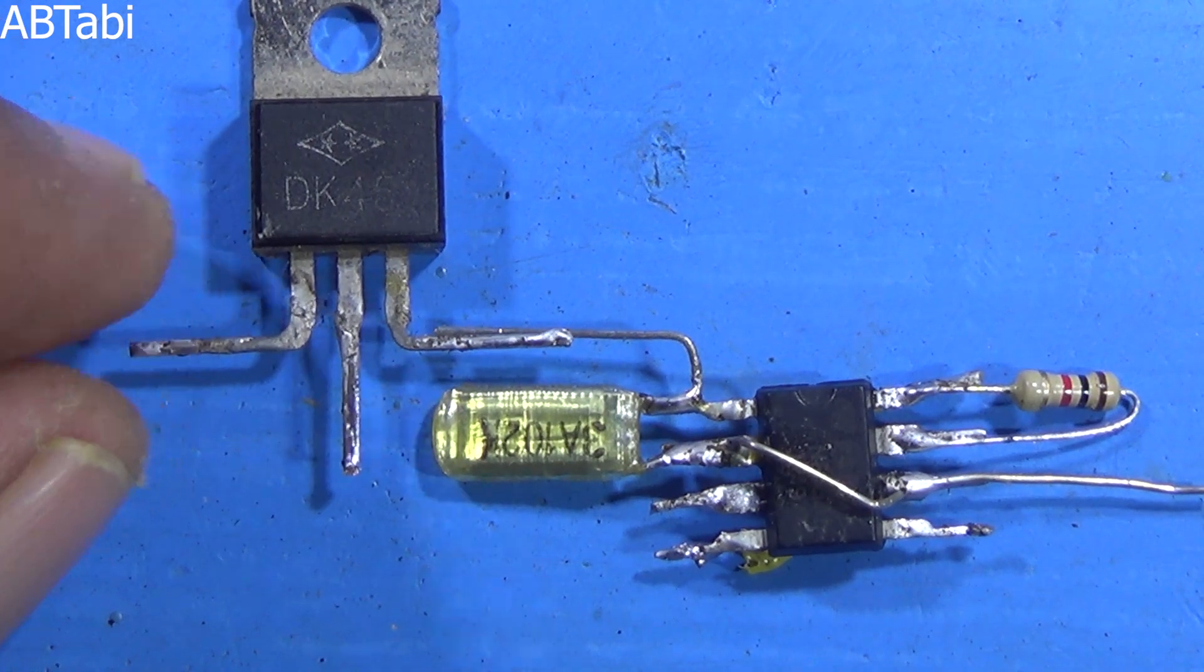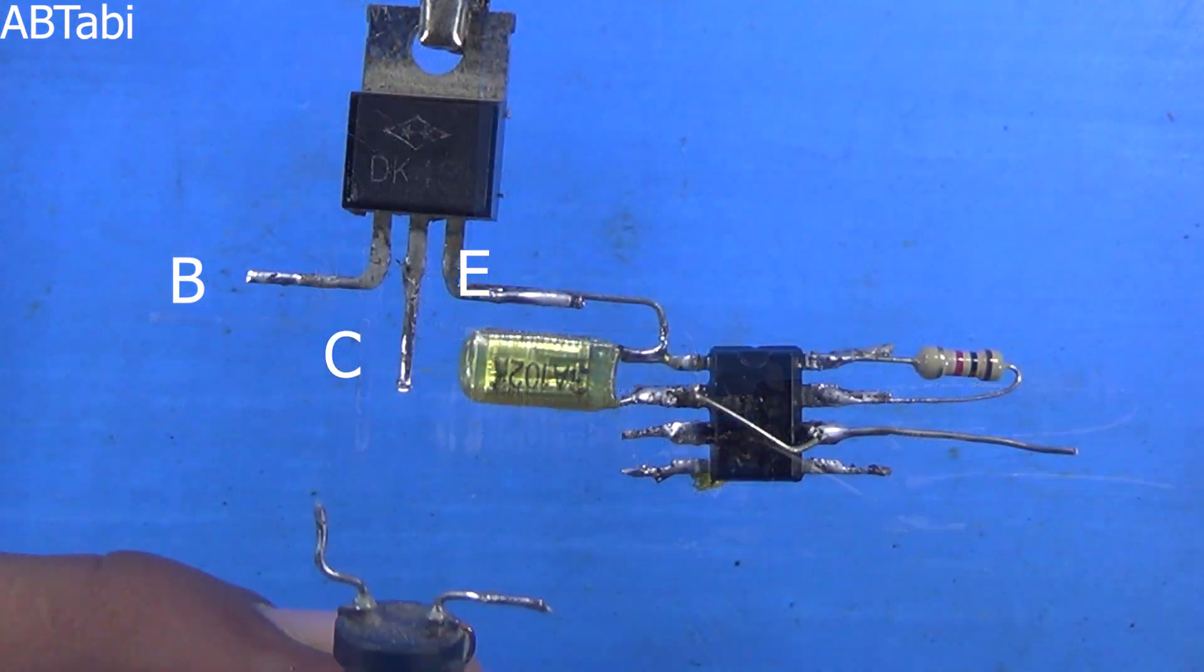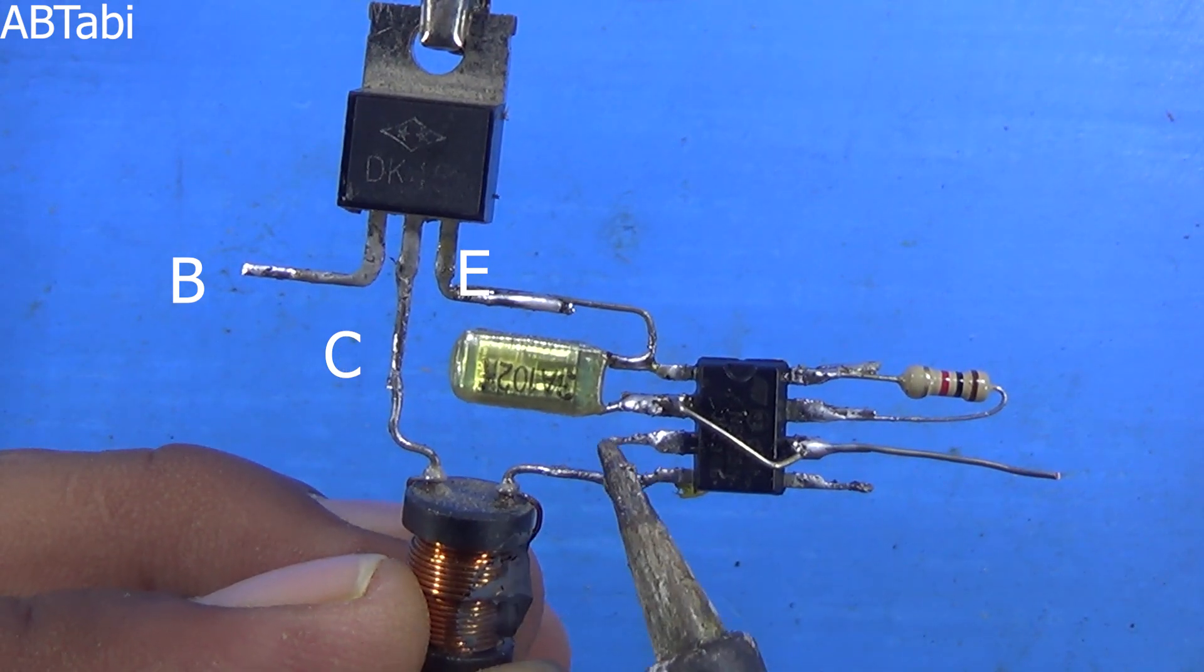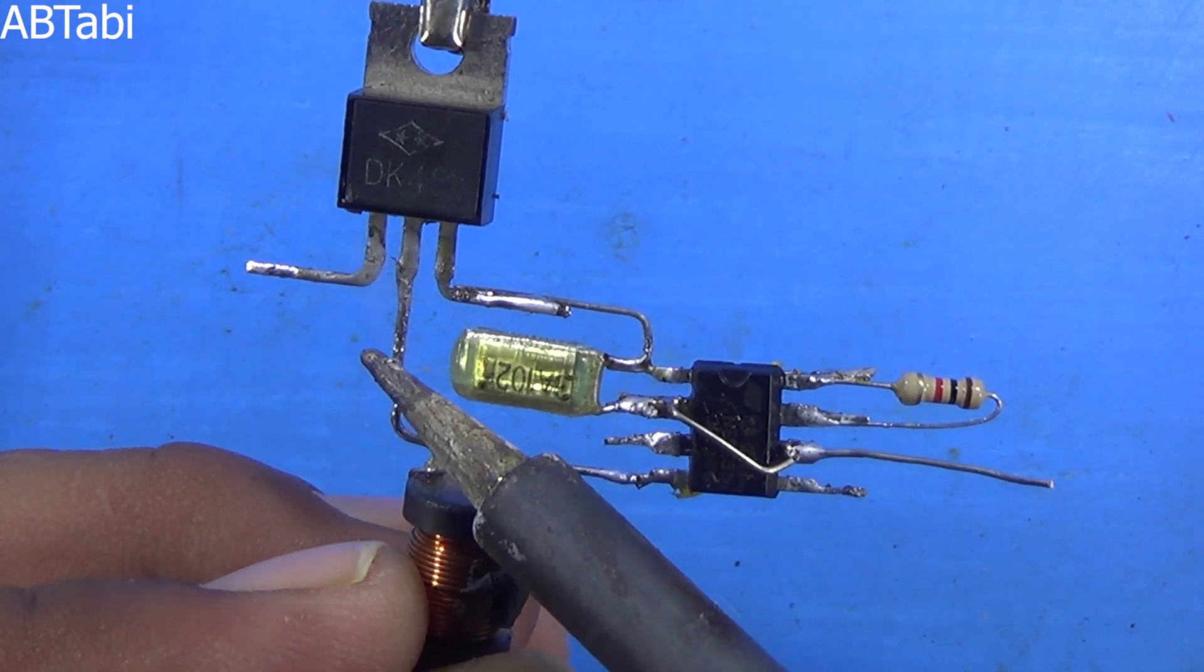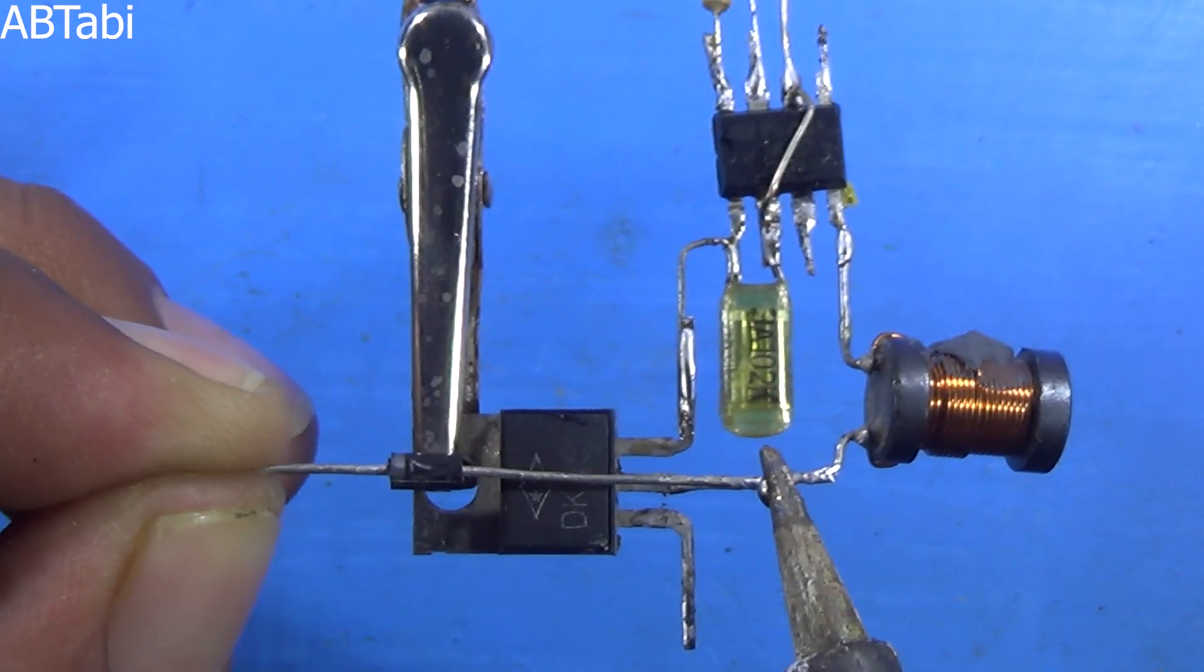DK45 NPN transistor emitter pin connects with IC pin 1. Inductor connects with IC pin 4 and transistor collector pin. 4007 diode connects with transistor collector pin.